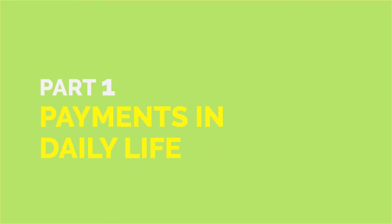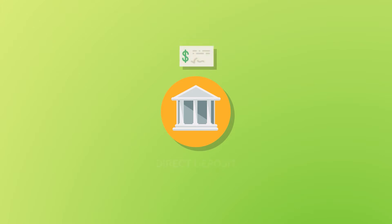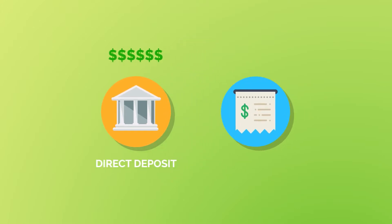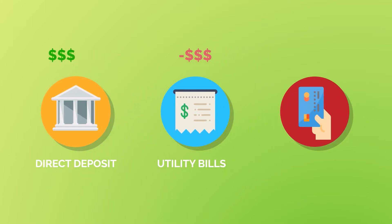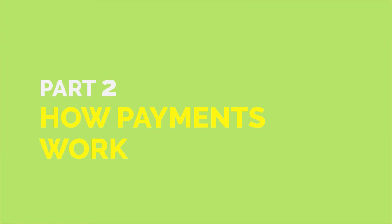Let us look at this from the perspective of an individual. As an individual, we get our paychecks, then we have bills to pay — for example, your utility bills. Further, you could have some smaller value payments: you go to a restaurant and use your credit card, or you go online and again use your credit card. So essentially, there are a lot of activities in your daily life that are impacted by payments.